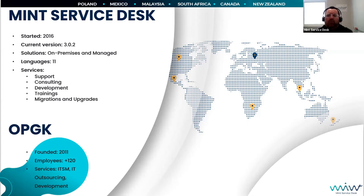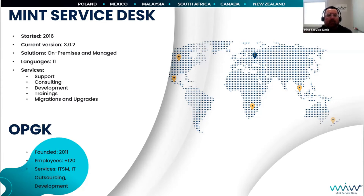You are able to download and install our free version, and if you want enterprise features, you can upgrade. The current version is 3.0.2. We have 11 languages in the system. The services our team provides include support contracts, consulting, implementation, development, training, and migrations or upgrades from different systems. Our main headquarters are in Poland, with offices covering all time zones: Mexico, Canada, South Africa, Malaysia, and New Zealand.